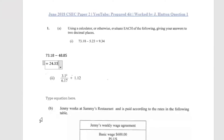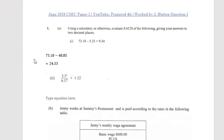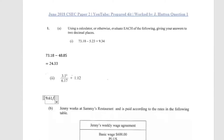Part two of question one: 3.1 squared, divided by 6.17, plus 1.12. Using order of operations, we first work out the square: 3.1 squared gives us 9.61. That result is then divided by 6.17.